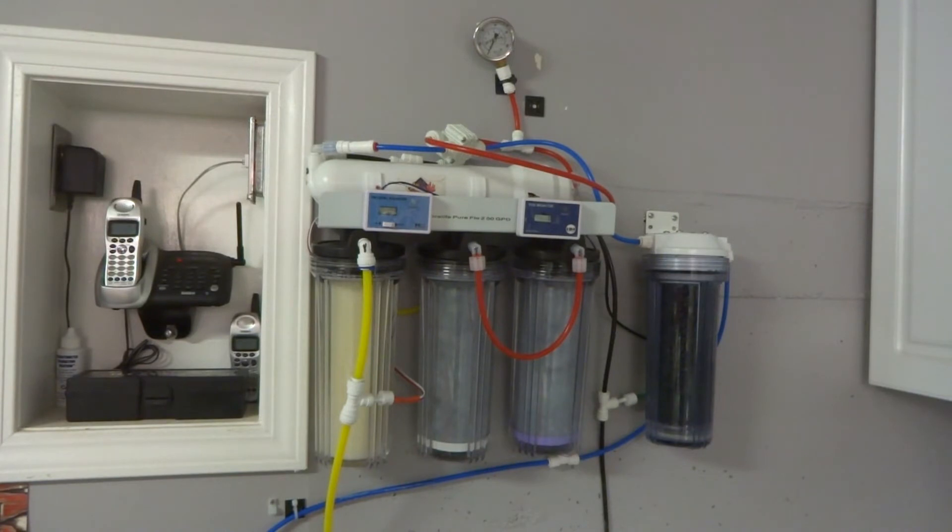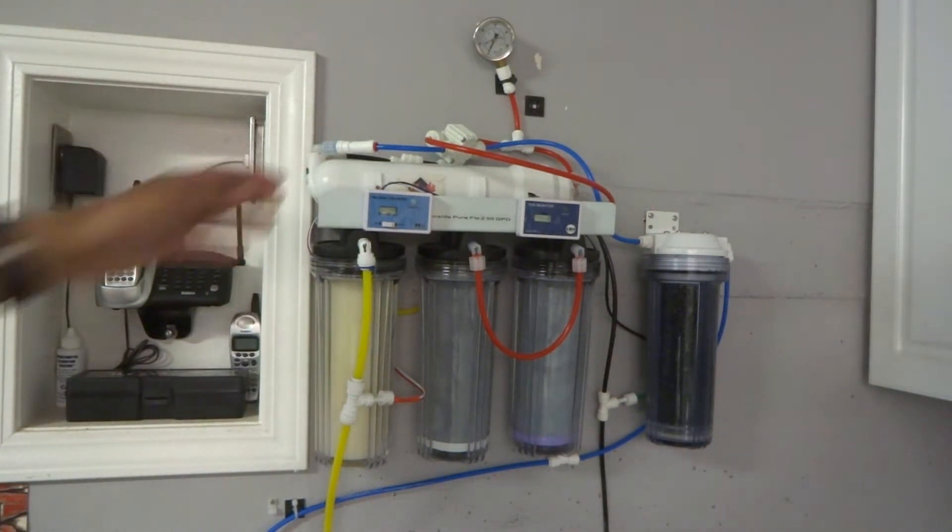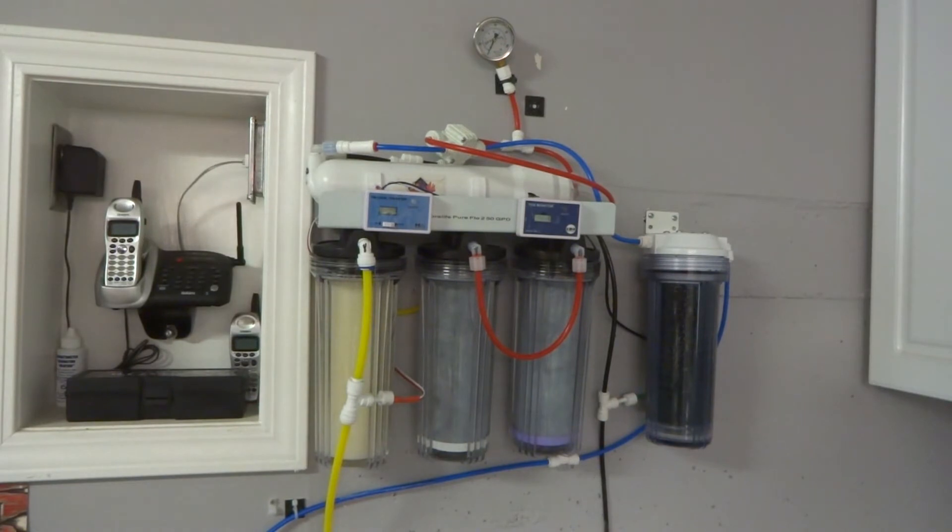When it comes to ratios the industry standard is for every four parts of waste water you should create one part of product water. If you think of a membrane here as a UV sterilizer, a UV sterilizer requires the right amount of flow for the UV to penetrate the water, kill off bacteria or problems.